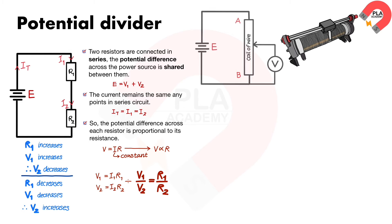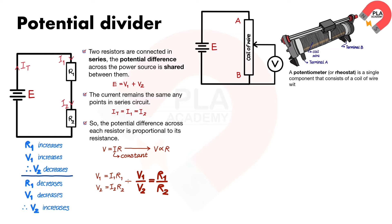A potentiometer, or rheostat, is a single component that consists of a coil of wire with a sliding contact midway along it, as shown. The sliding contact has the effect of separating the potentiometer into two parts — an upper part and a lower part — both of which have different resistances.